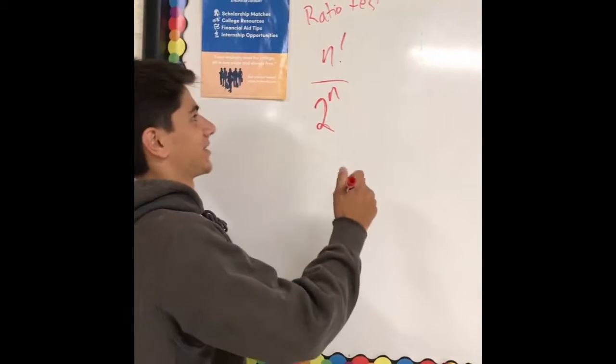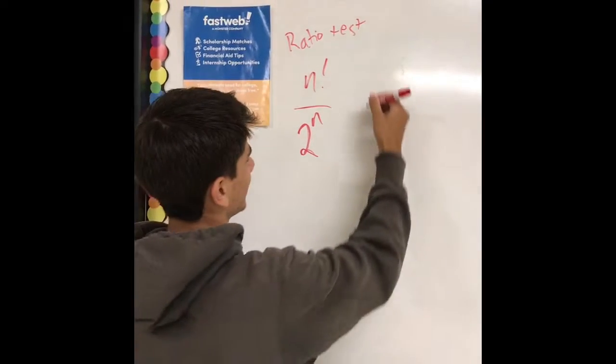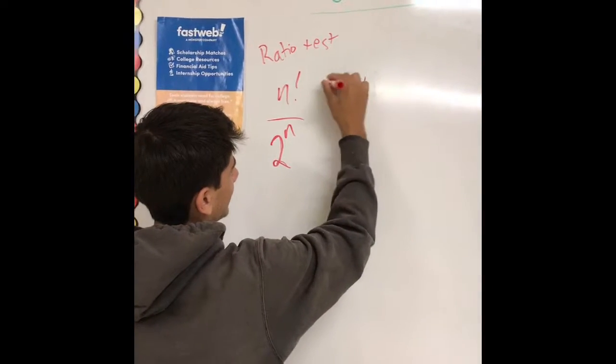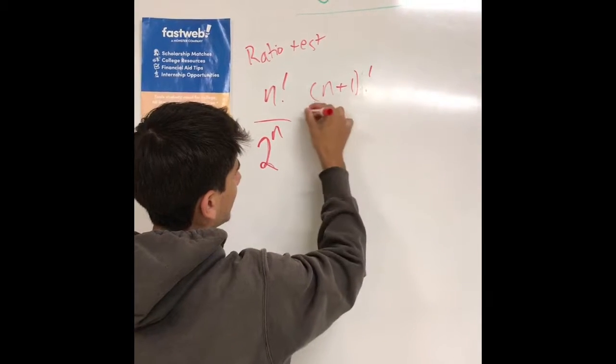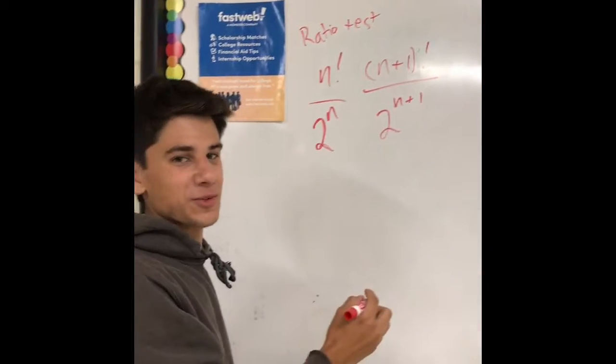I'm going to show you how to do the ratio test. So we're going to add 1 to everywhere we see an N, then multiply it by the reciprocal.